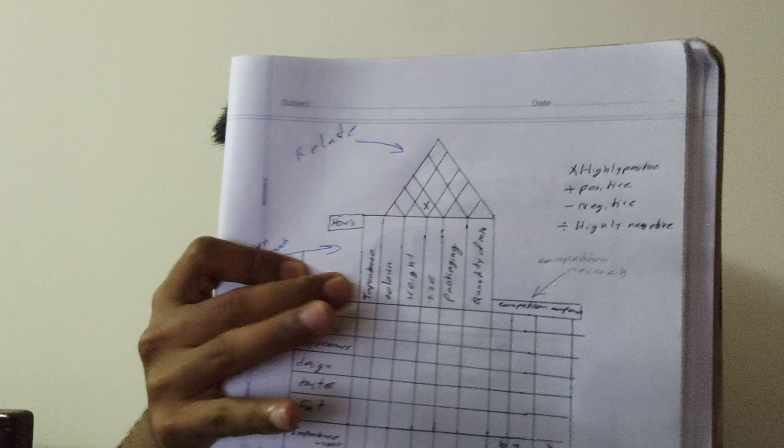This process continues until each objective is refined to an actionable level. The 'how much' prioritized technical descriptions, which are these ones, are usually carried along to the next chart to facilitate communication. This ensures that the target values are not lost during the QFD process.